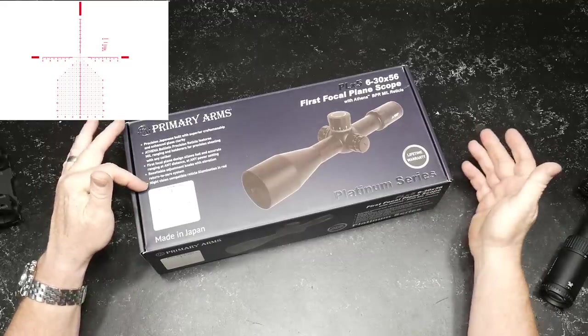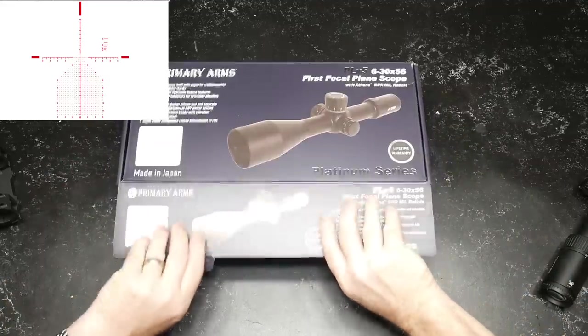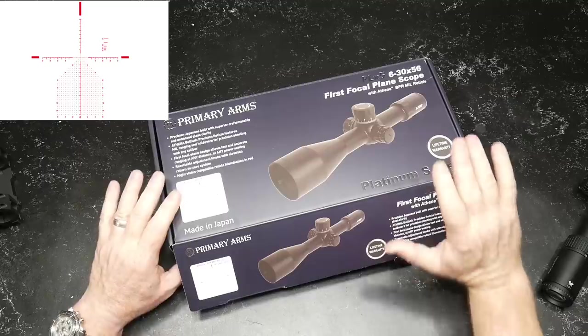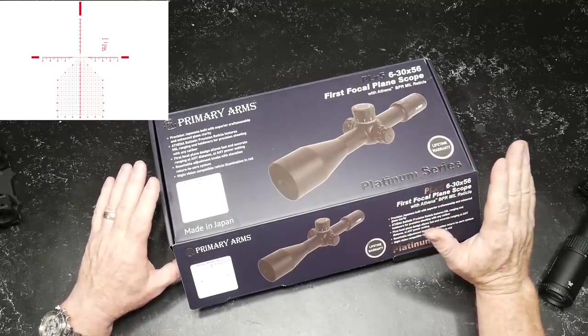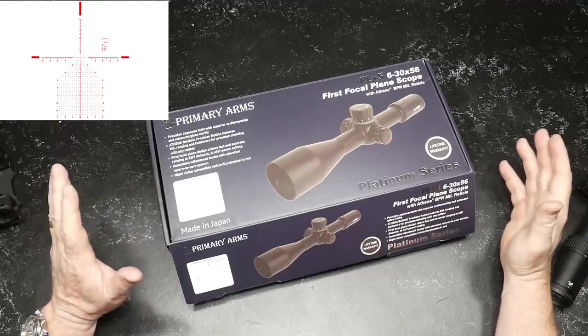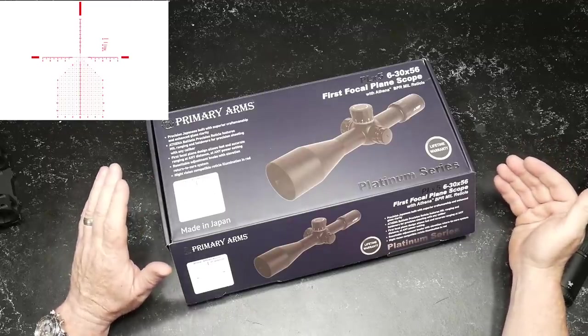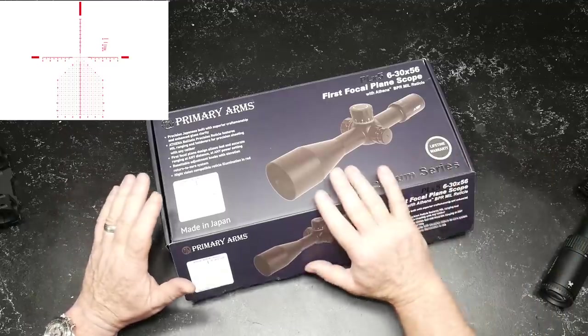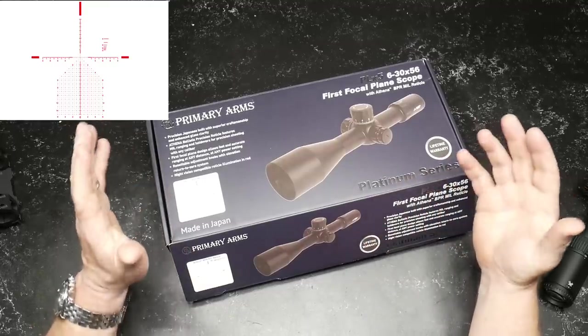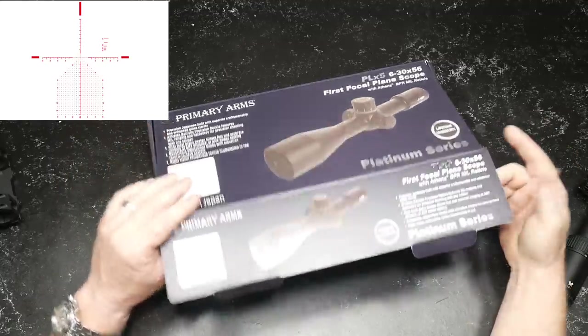It also has a night vision illumination reticle. There's a lot of cool things in here. Let's go ahead and open up the box and see what we have. I will also talk to you about the Athena reticle. The beauty is you've got Primary Arms manufacturing this scope in Japan in one of the best scope manufacturing facilities, teamed up with an incredible reticle, the Athena.